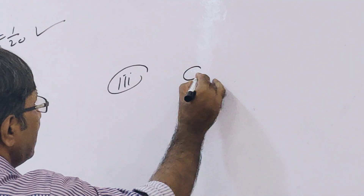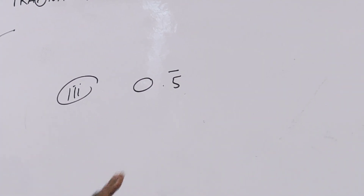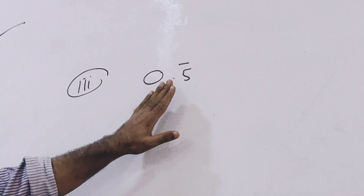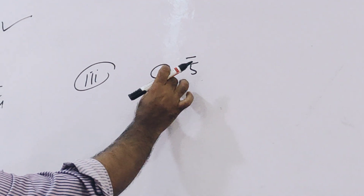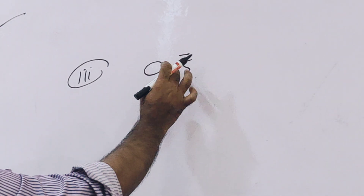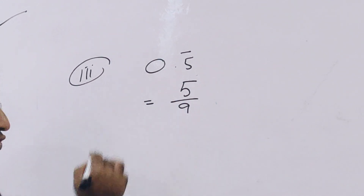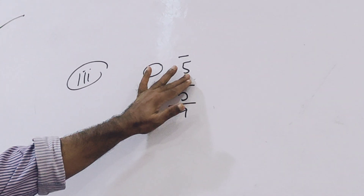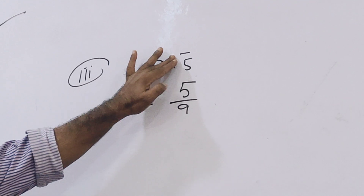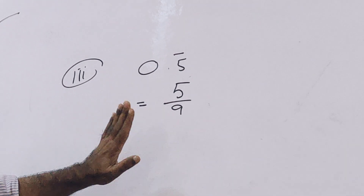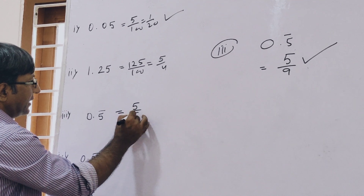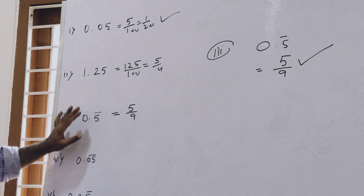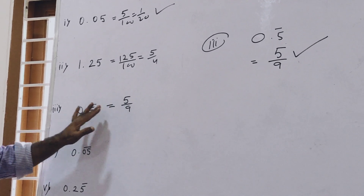Now the most important one is the third question: 0.5 bar. So 0.5 bar means the digit 5 is repeated — you can say 0.5555 and so on. The trick: before the decimal there is 0, so no whole number part. After the decimal there is 1 bar digit. So the answer is 5 upon 9. The technique is: however many digits have a bar, place that many 9s. So 5 by 9 is the correct answer.